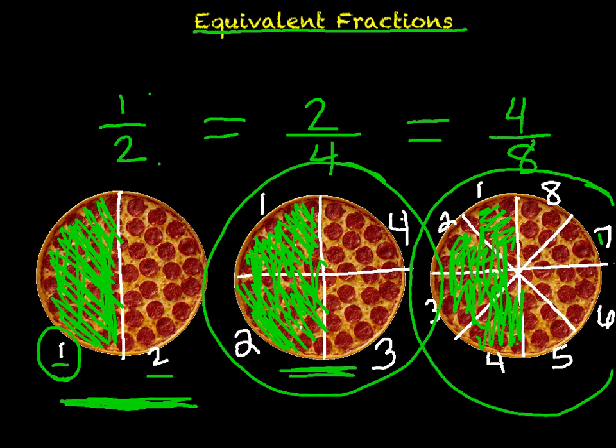If you look at it like this, another way, and if you're getting confused, you can kind of shut your ears off here. But another way to look at this is like this. Because she cut it into twice as many pieces, so you have to eat twice as much. One times two is two. Two times two is four.